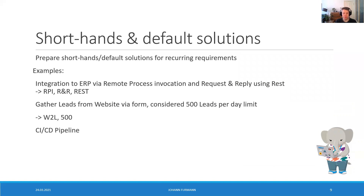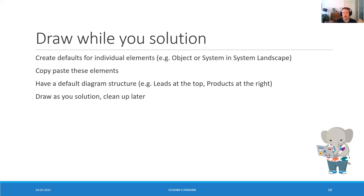To become faster, create short tenses and default solutions for recurring patterns. For example, an integration to the ERP system via remote process invocation request-reply using REST becomes in my notes 'RPI RR REST.' Getting a lead from the website via a form considering the 500 leads-per-day limit becomes 'Web-to-Lead 500.' I created short tenses for many recurring requirements and solutions. I also have a whole default solution for CI/CD pipelines which I adopt to the scenario at hand.